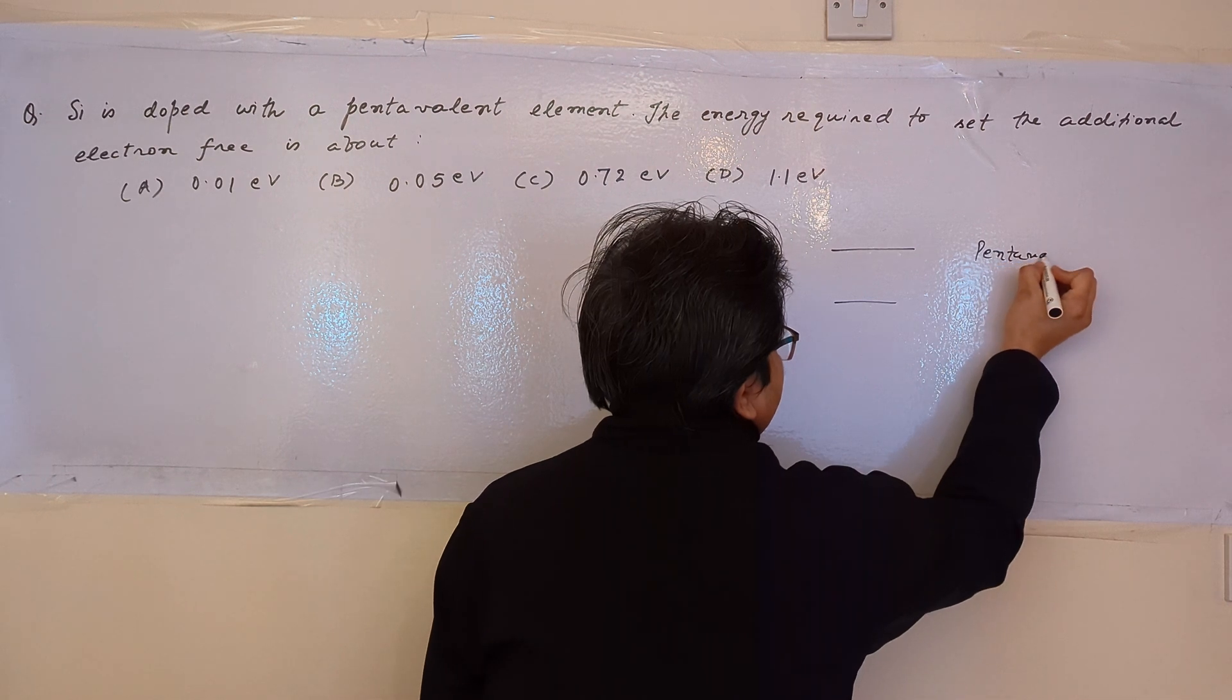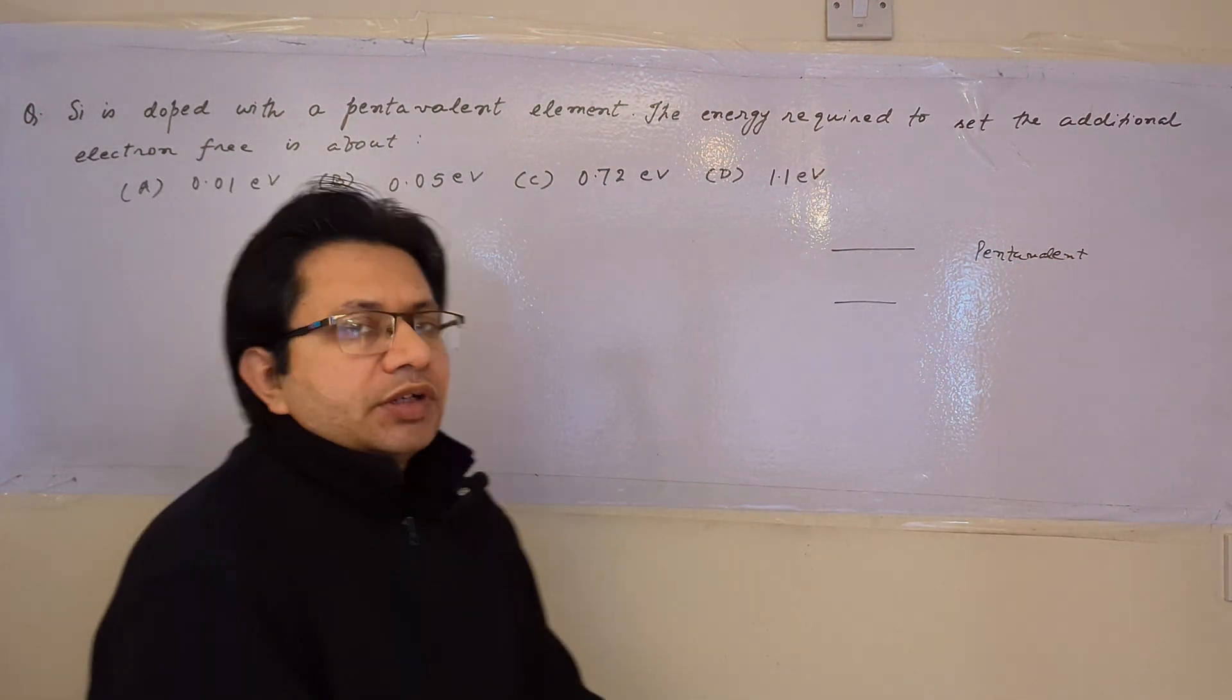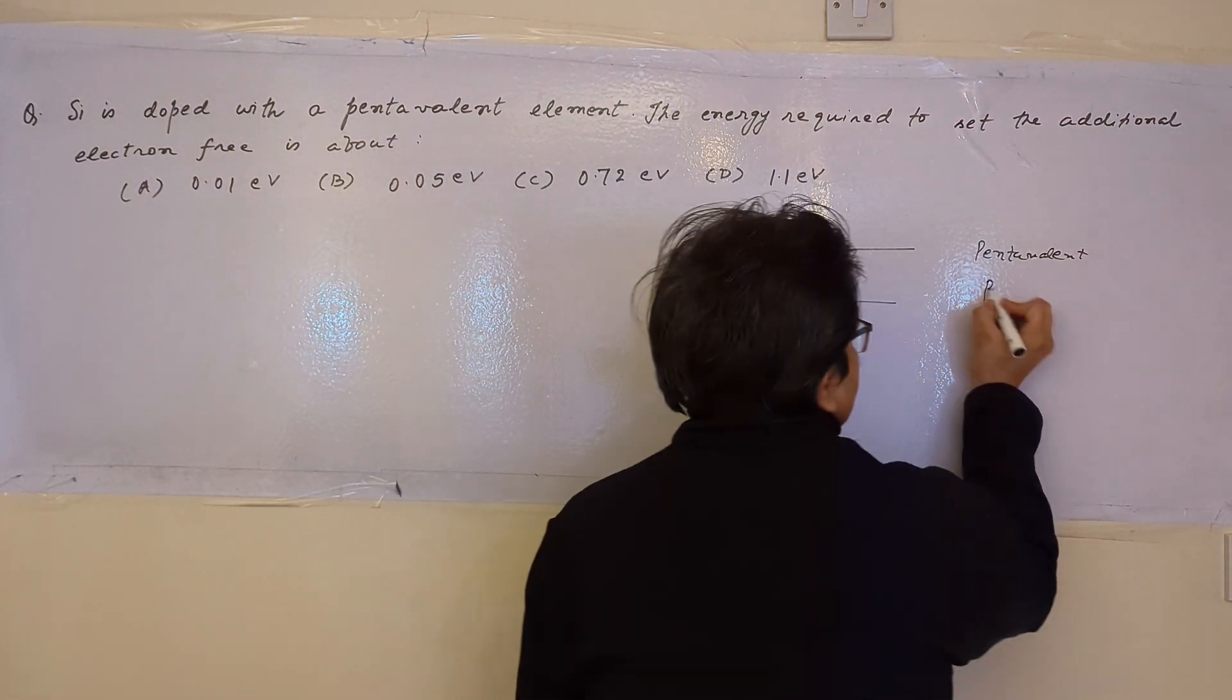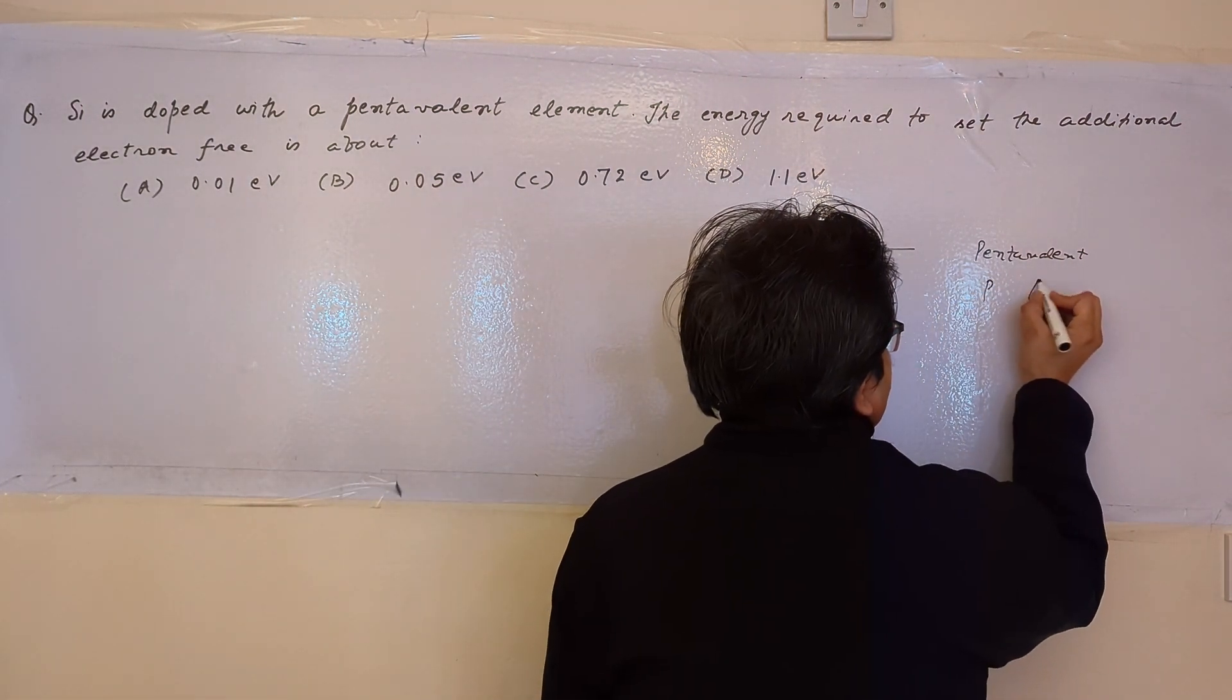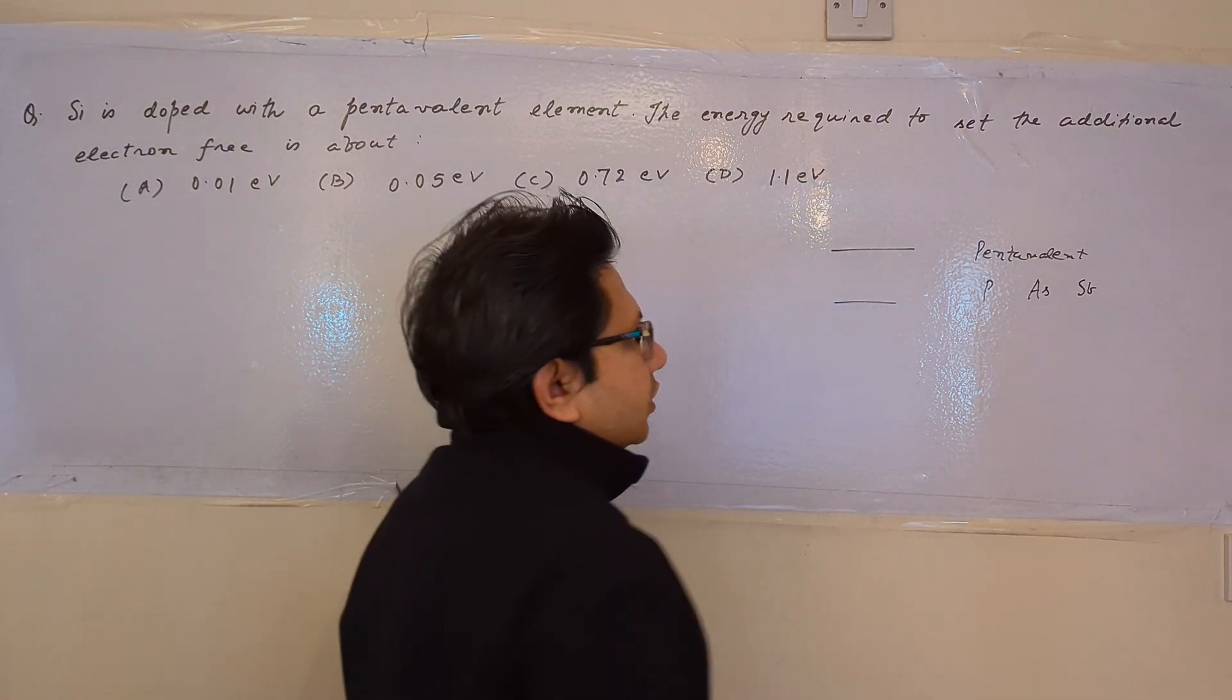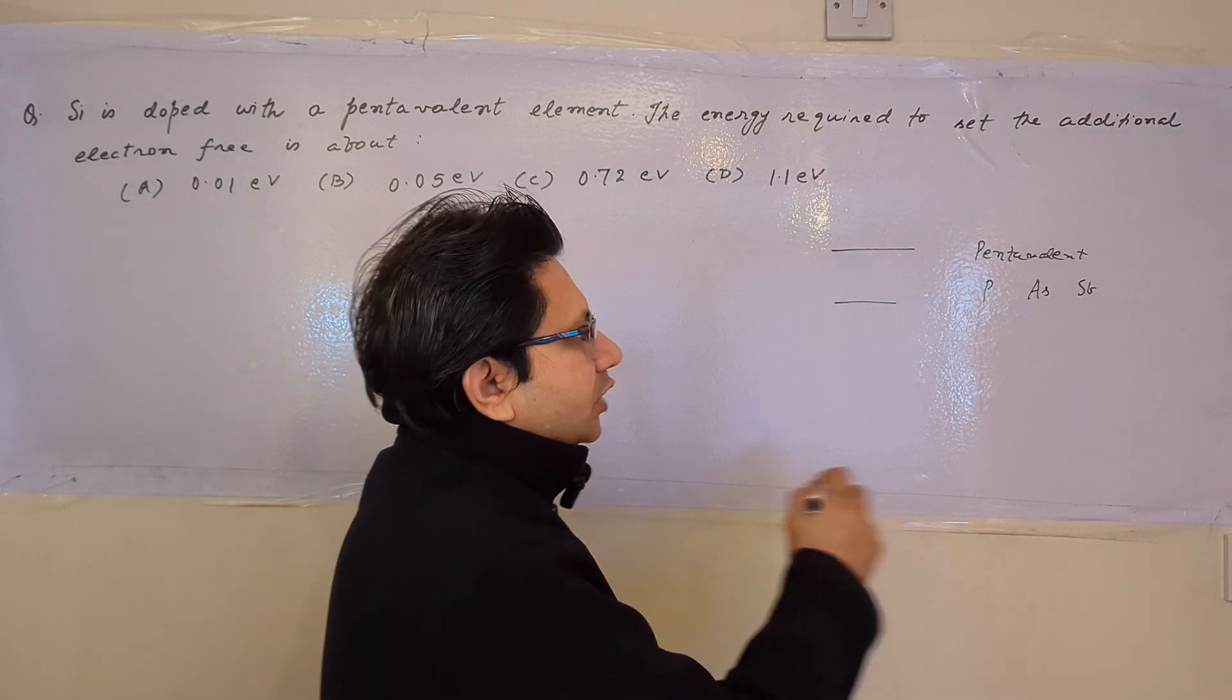Pentavalent means those elements which have 5 electrons in their outer shell. For example, phosphorus, arsenic, and antimony. These are a few examples having 5 electrons in the outer shell.